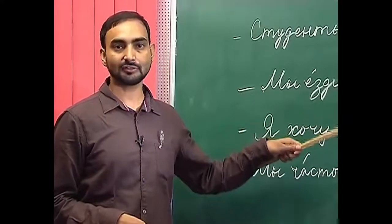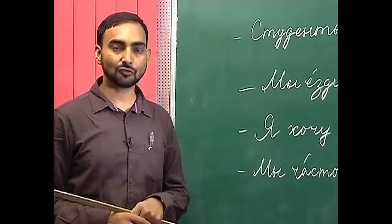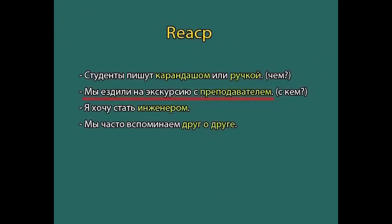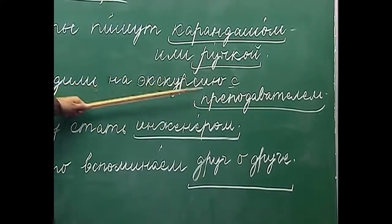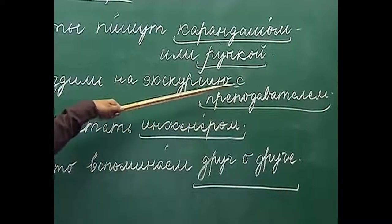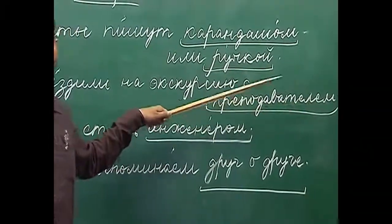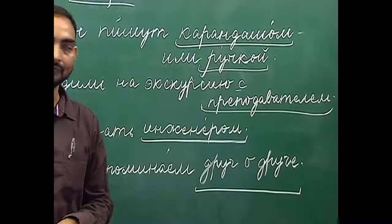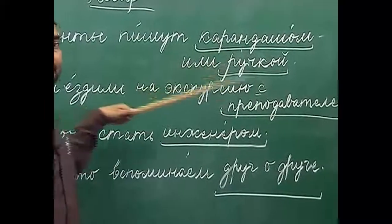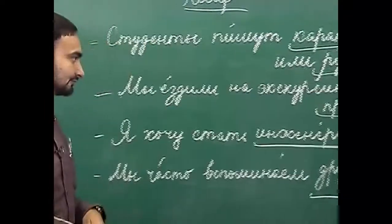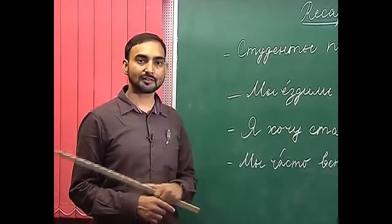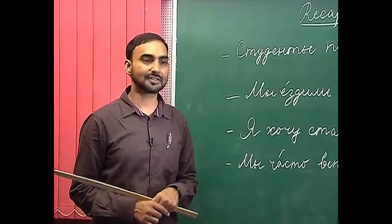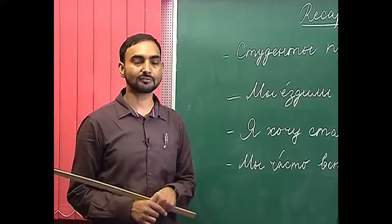The other use we discussed is that with the preposition 'с' (with), the instrumental case of a noun denotes the person with whom an action is performed. For example, we went for an excursion with the teacher. Here, as you can see, it answers the question 'с кем?' The third use is with the verbs such as стать, where we use the instrumental case of nouns.